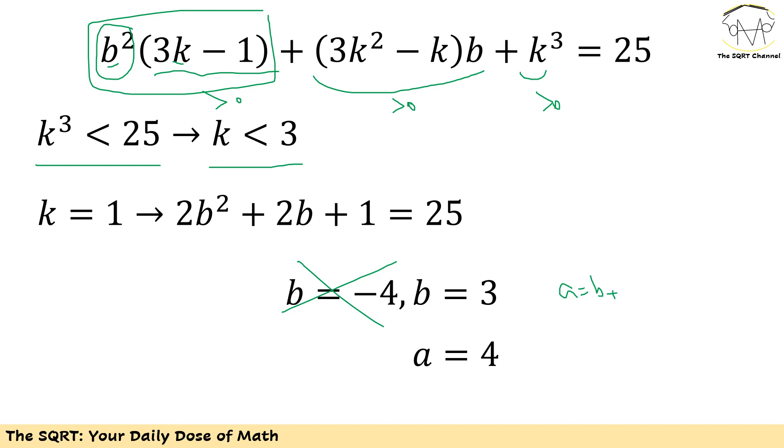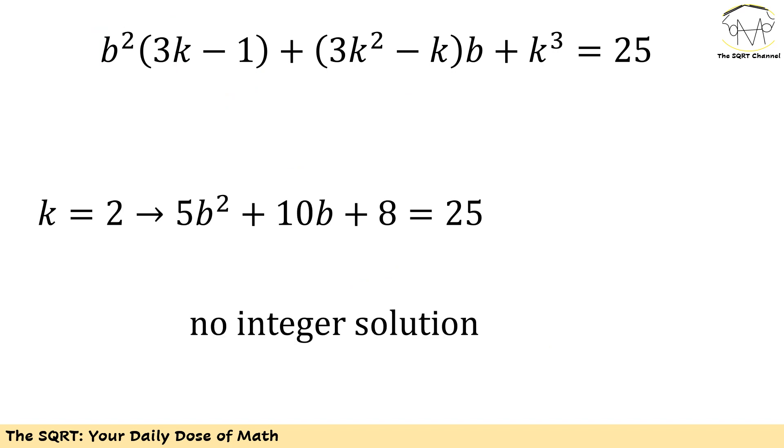Now let's move on and use k equals 2. For k equals 2 I'm going to end up with a new quadratic equation. 5b² plus 10b plus 8 equals 25 but you are not going to find an integer solution for this. So at the end we only have one set of values: a equals 4 and b equals 3.